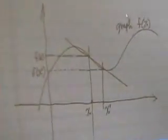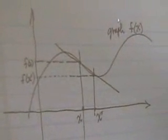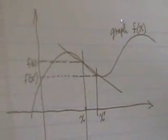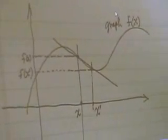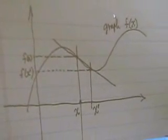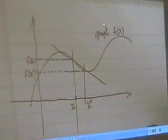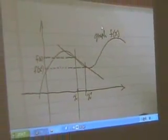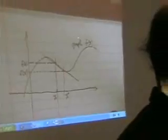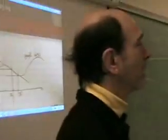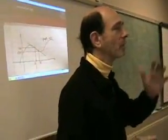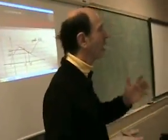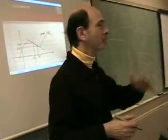Now everybody here knows all about straight lines. You had in Algebra 1 mx plus b, then you had it again in Algebra 2 — mx plus b — that's called the slope-intercept form of a line: y equals mx plus b.